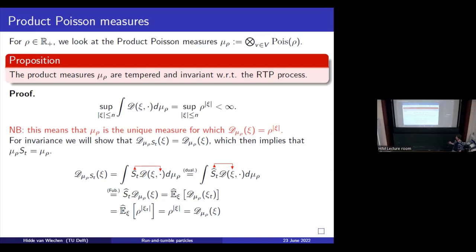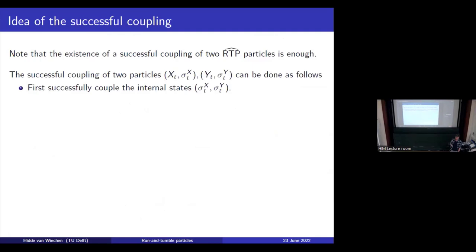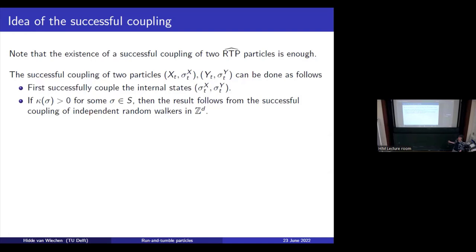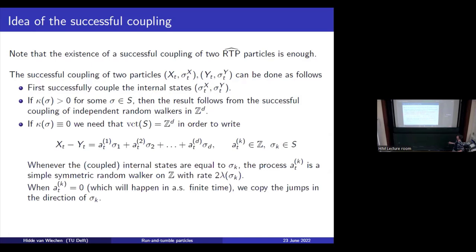The only remaining thing to show is that there exists a successful coupling. It basically comes down to the following: we first successfully couple the internal states, making sure they meet at some time and then stay together forever. After that, either the symmetric random walk jumps do the trick and successfully couple the particles, or otherwise we have a way to do it with just the active jumps. If you want more details, please ask me later.